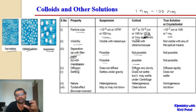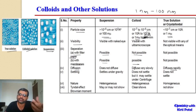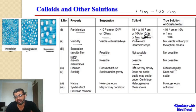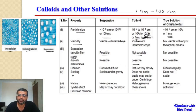Colloidal substances need to be viewed using an ultra-microscope; they cannot be seen by optical methods. Because colloidal particles have a larger size and greater mass, they diffuse slowly, whereas true solution particles, having a smaller size and lesser mass, diffuse easily and have greater velocity.